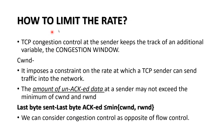How to limit the rate? It will limit the rate by using another window which is known as CWND, meaning the congestion window. The amount of unacknowledged data at a sender may not exceed the minimum of CWND and RWND — the congestion window and the receiving window.